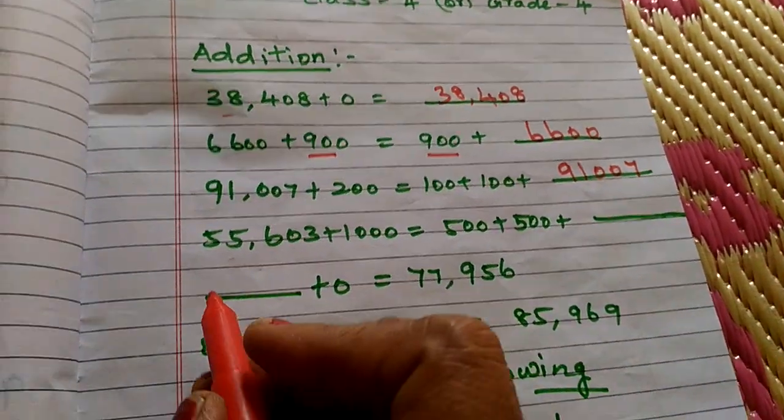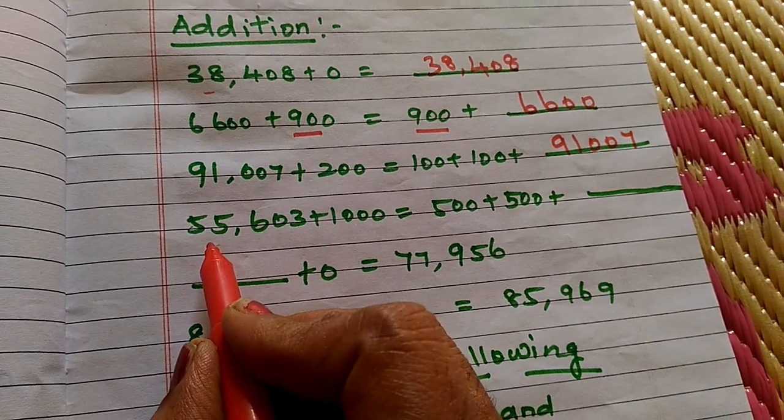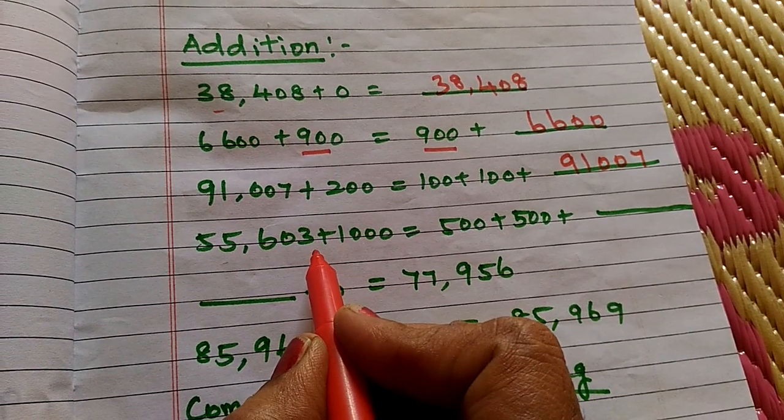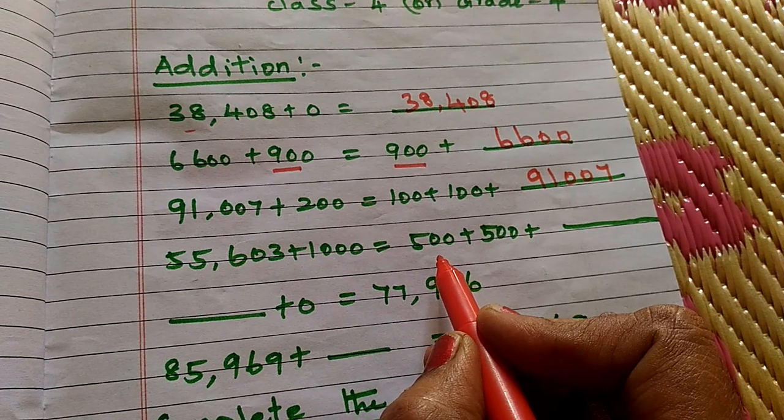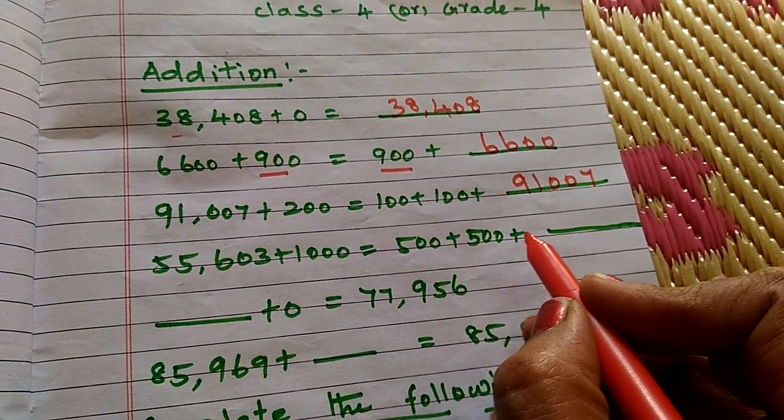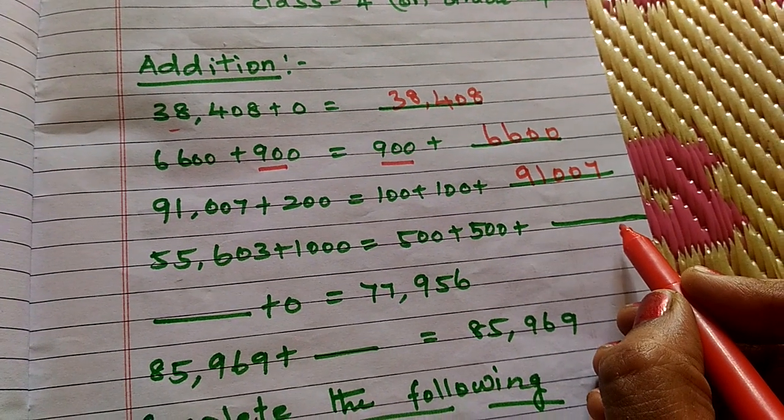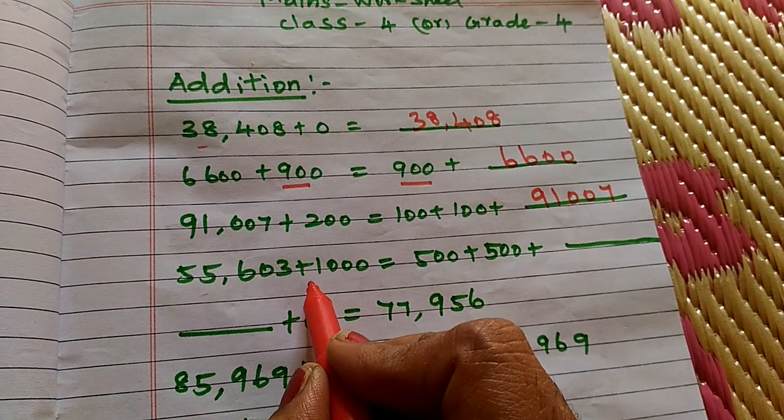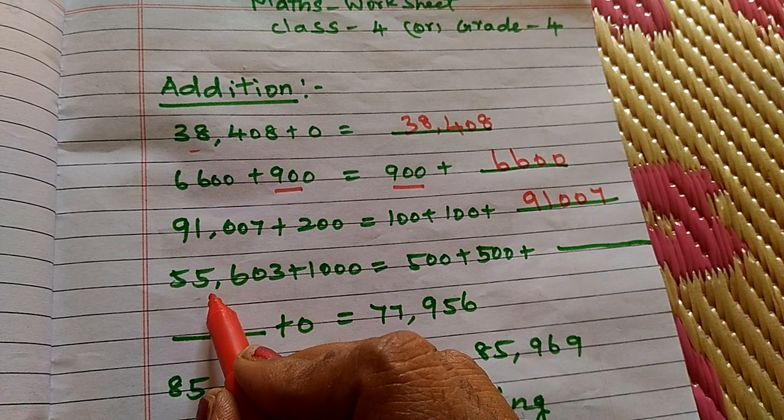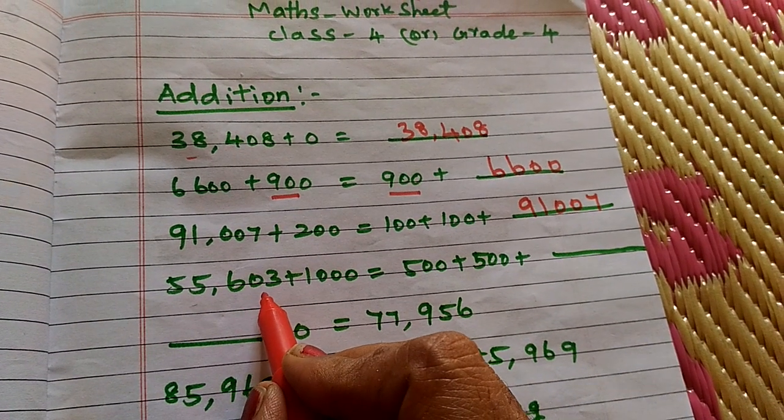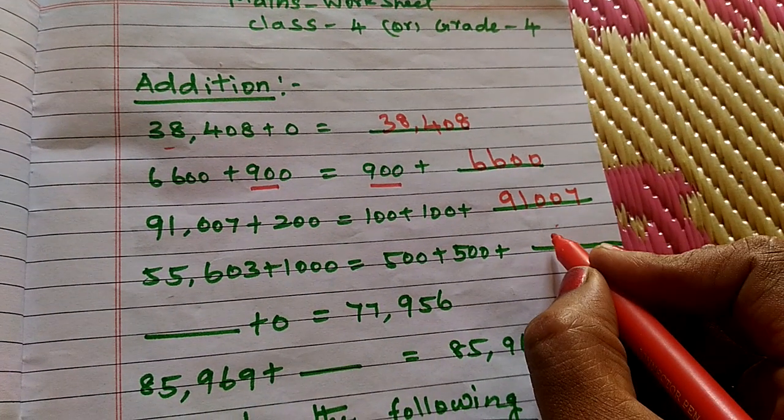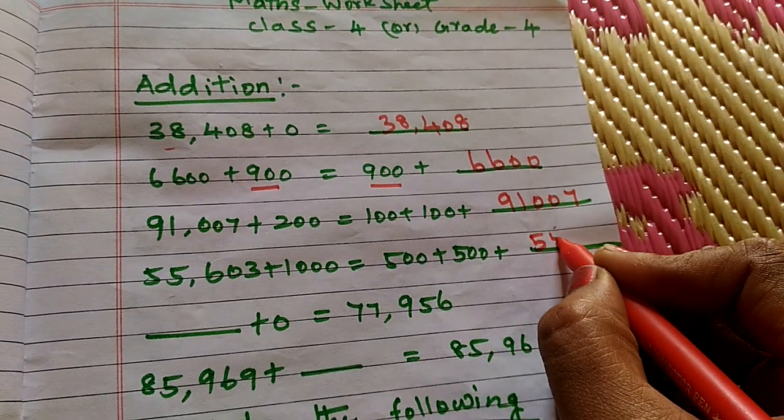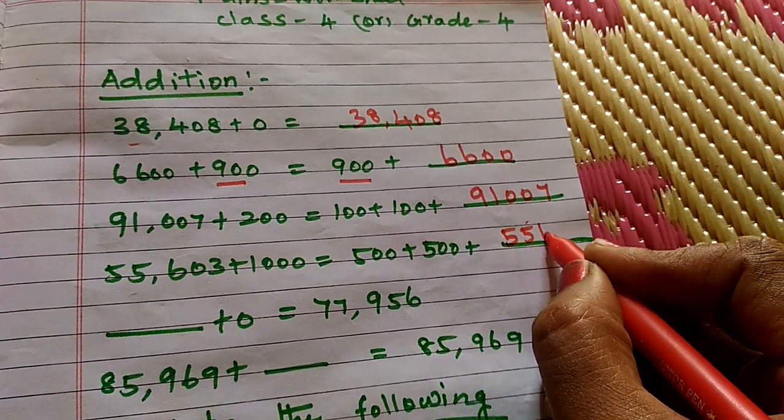Then, one more example. 55,603 plus 1,000 equals 500 plus 500 plus dash. See here. 500 plus 500 equals 1,000. 55,603 answer. You write here, 55,603.